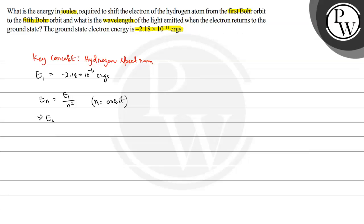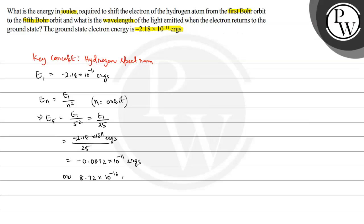So E5 is equal to E1 divided by 5 squared, or E1 divided by 25. Putting in the value of E1, that is minus 2.18 into 10 raised to the power minus 11 ergs divided by 25, we get E5 equals minus 0.0872 into 10 to the power minus 11 ergs. This is the energy of the fifth orbit.